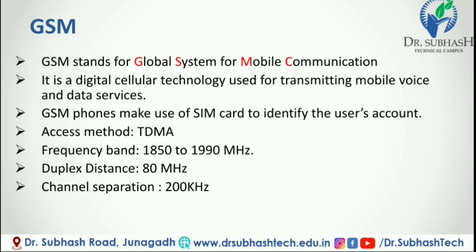Frequency band in GSM: the frequency range specified for GSM is 1850 to 1990 MHz. Duplex distance is 80 MHz — this is the distance between the uplink and downlink frequency, meaning a channel has two frequencies 80 MHz apart. Channel separation in GSM: the separation between adjacent carrier frequencies is 200 KHz.